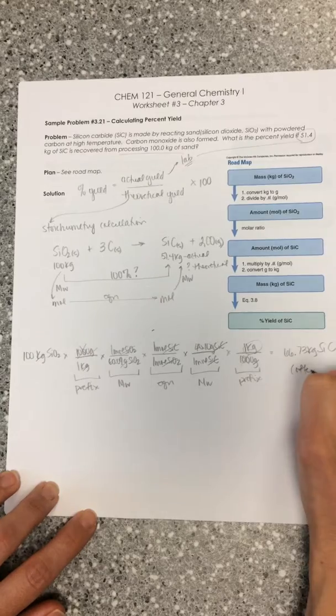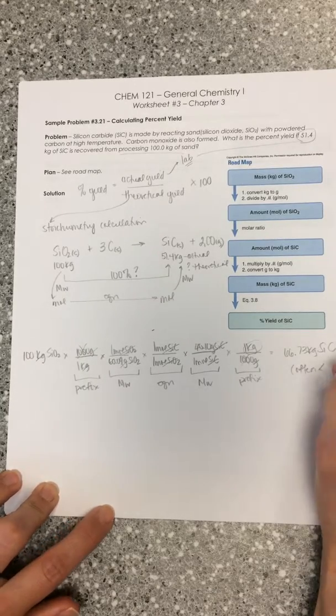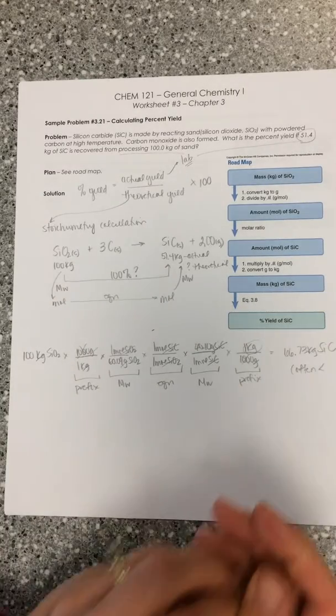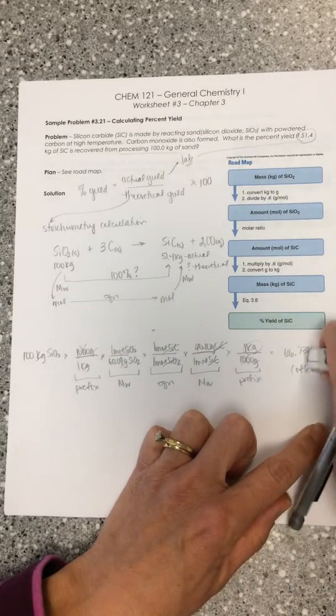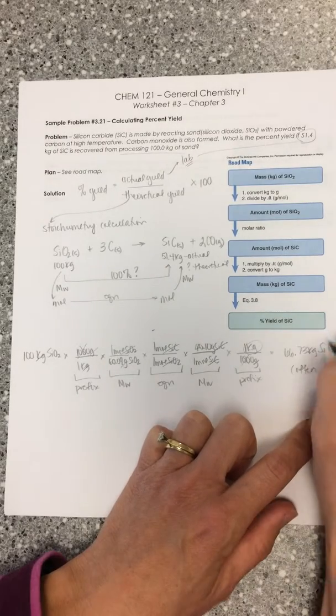This is going to be a number that's greater than your actual yield. Remember, this is our theoretical yield. Often, this is greater than your actual yield, because you're never going to be able to get the ideal 100%. You're going to lose some material somewhere.